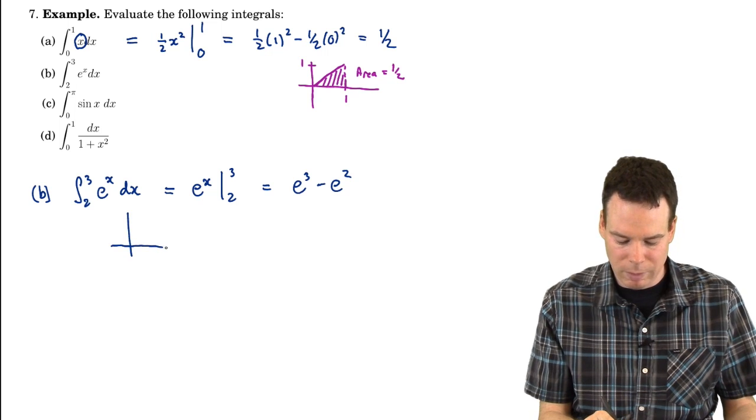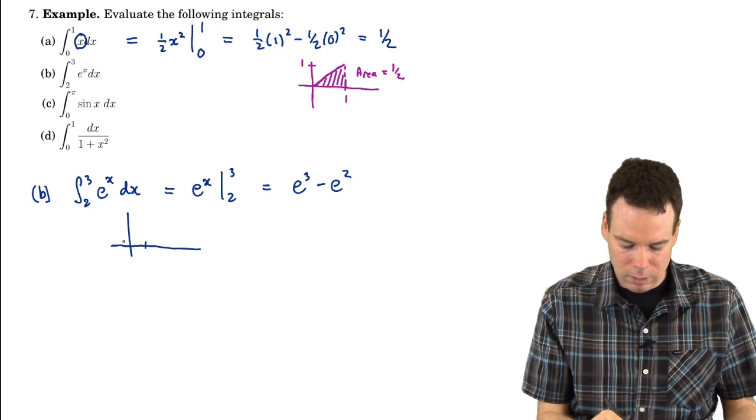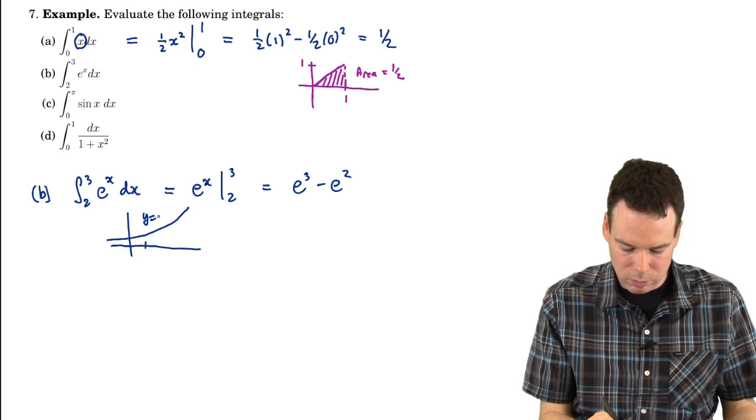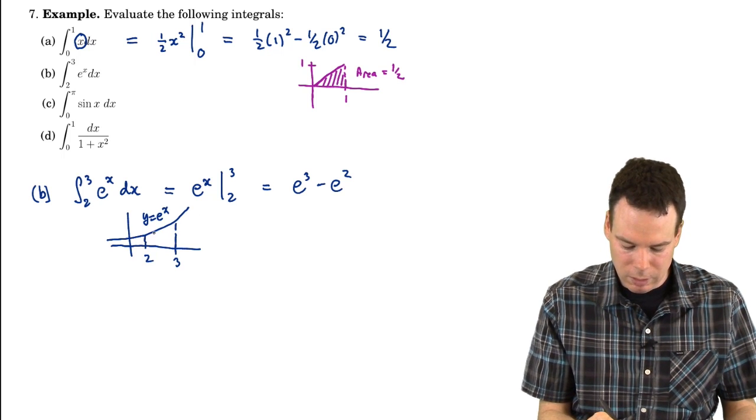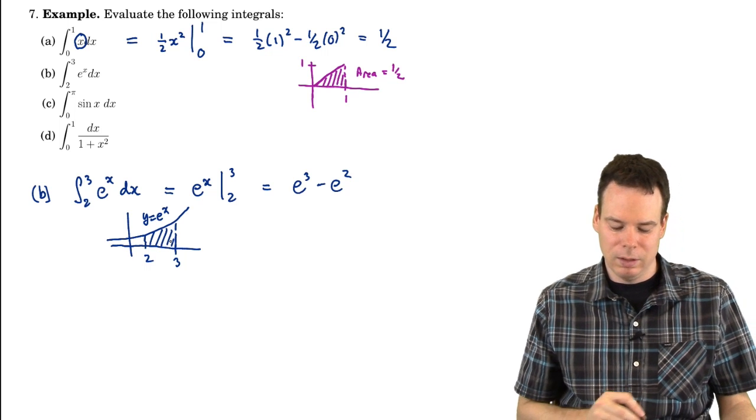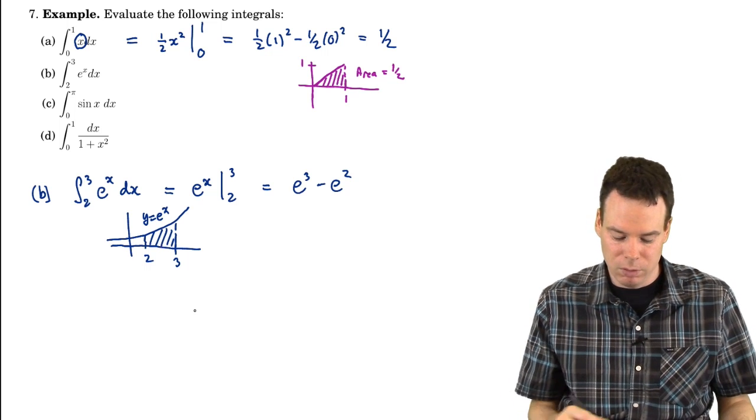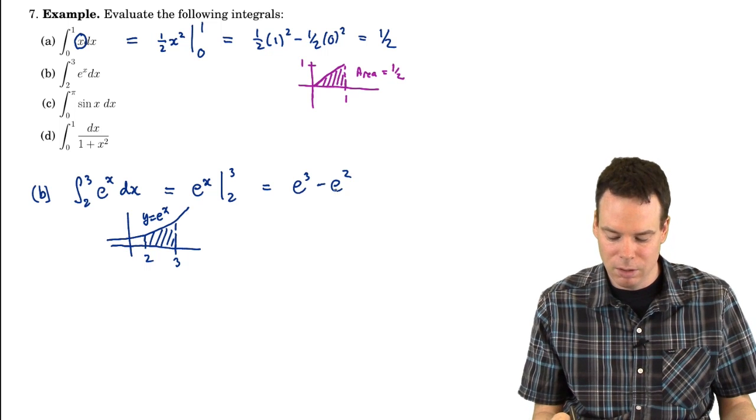And remember what the integral represents—here's our function e to the x. So that's y equals e to the x, going from 2 to 3. What that integral represents is, in this case, since it's sitting above the x-axis, it's the area of that region. We just found the area of that region. It's e to the 3 minus e to the 2.